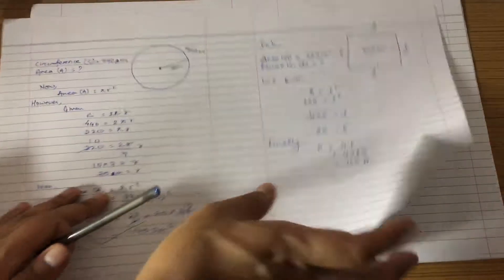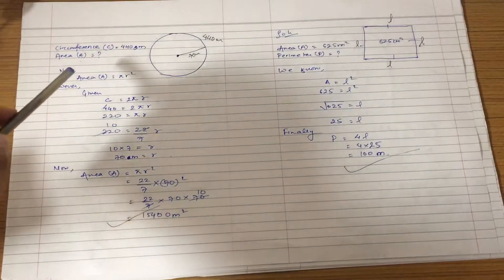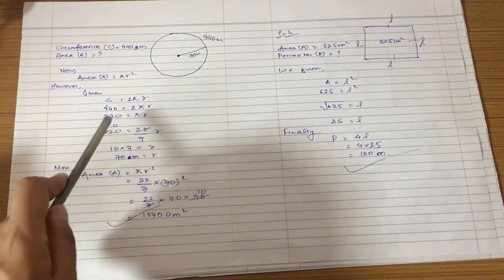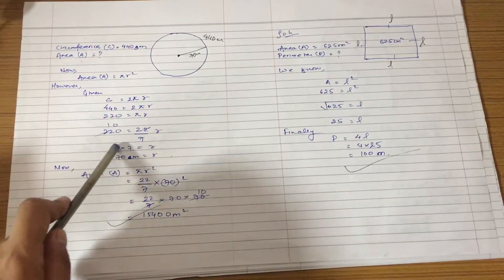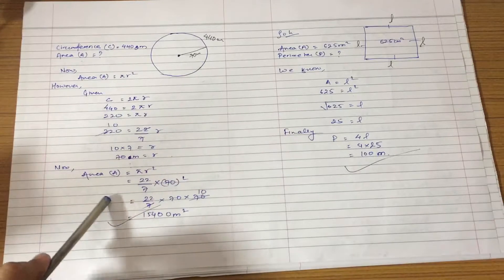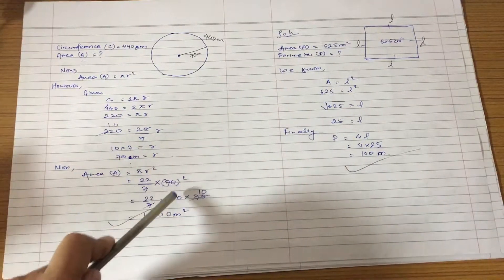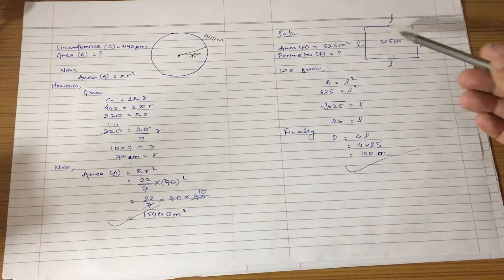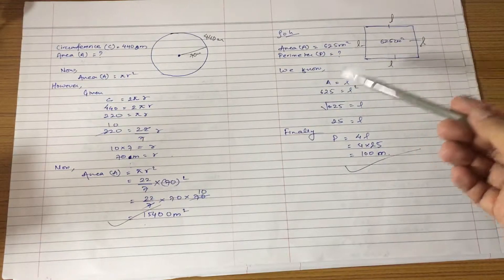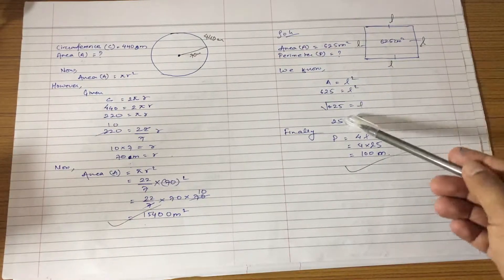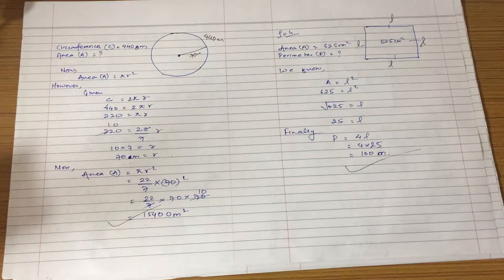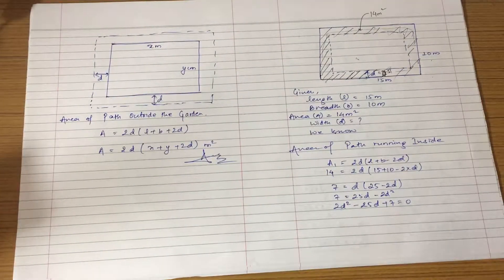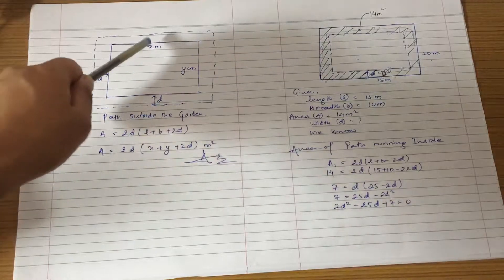Let us see another question. Without wasting time, we have area of path. We have width and length Y. This is the formula for 2D, L plus B plus 2D.